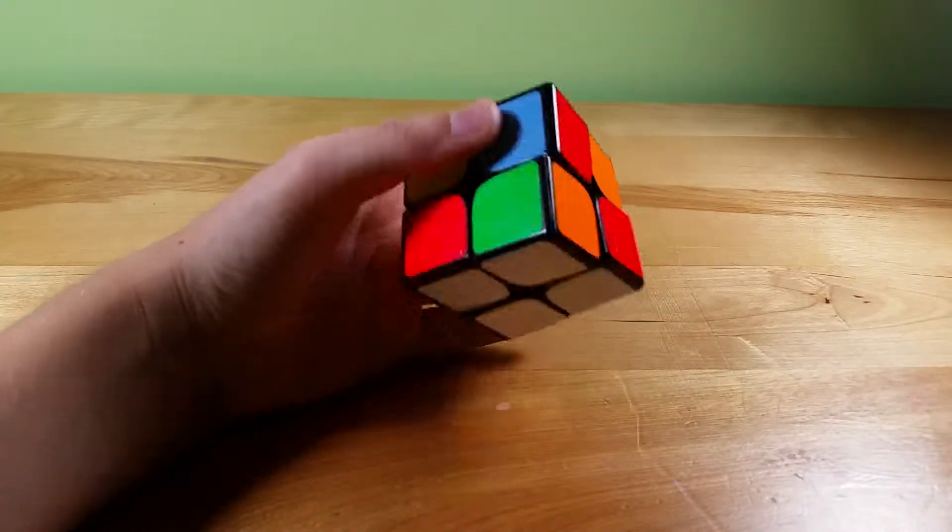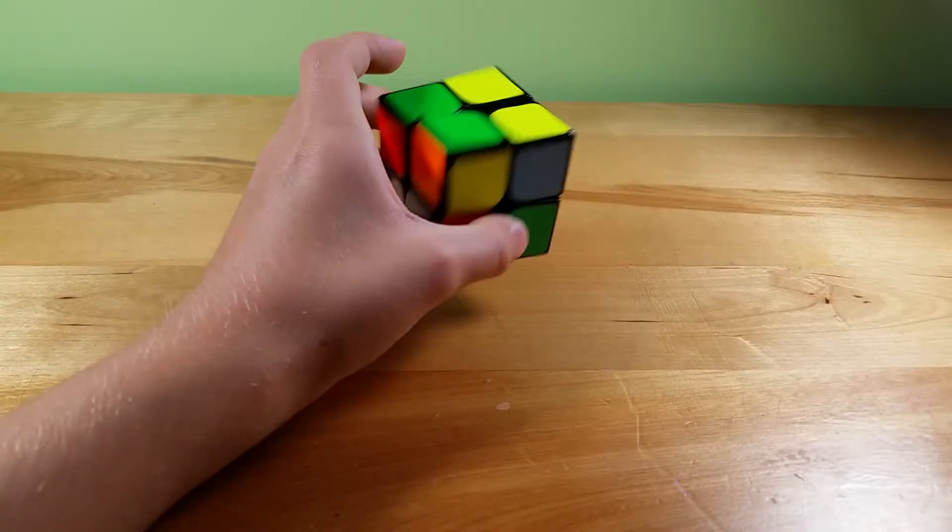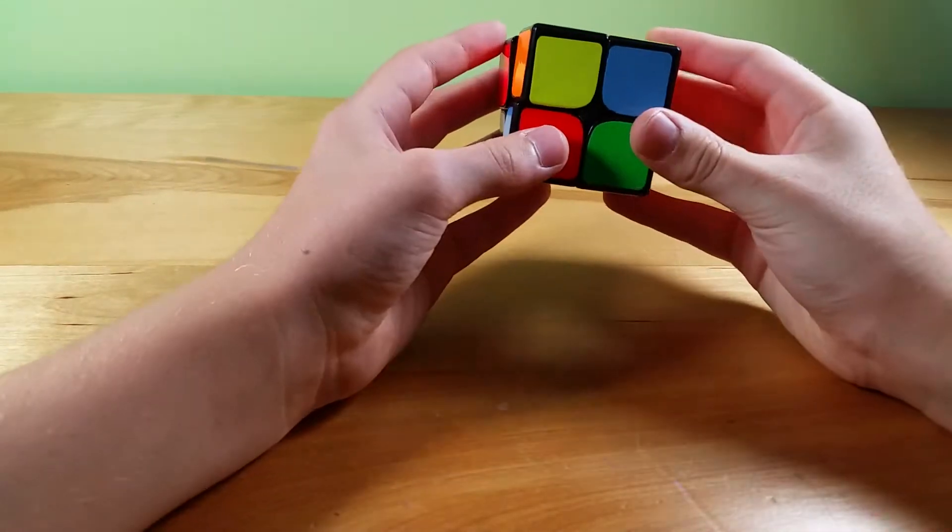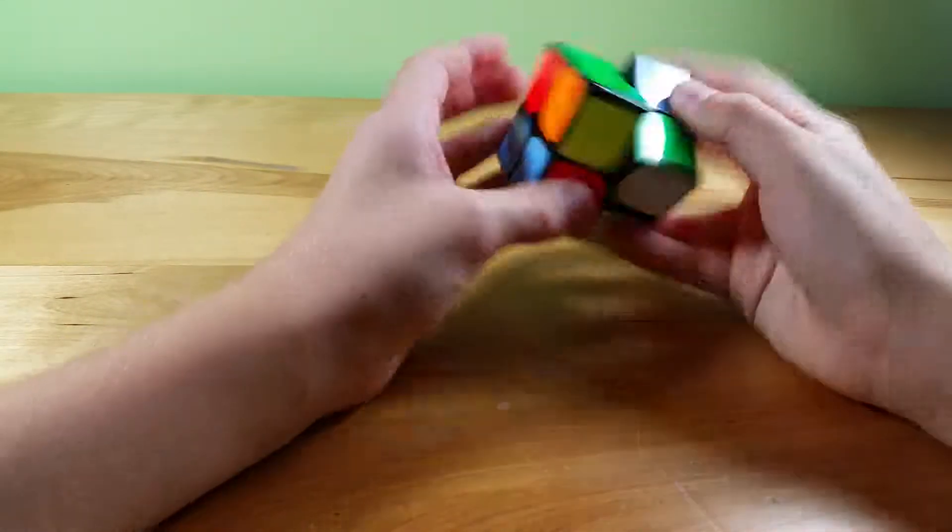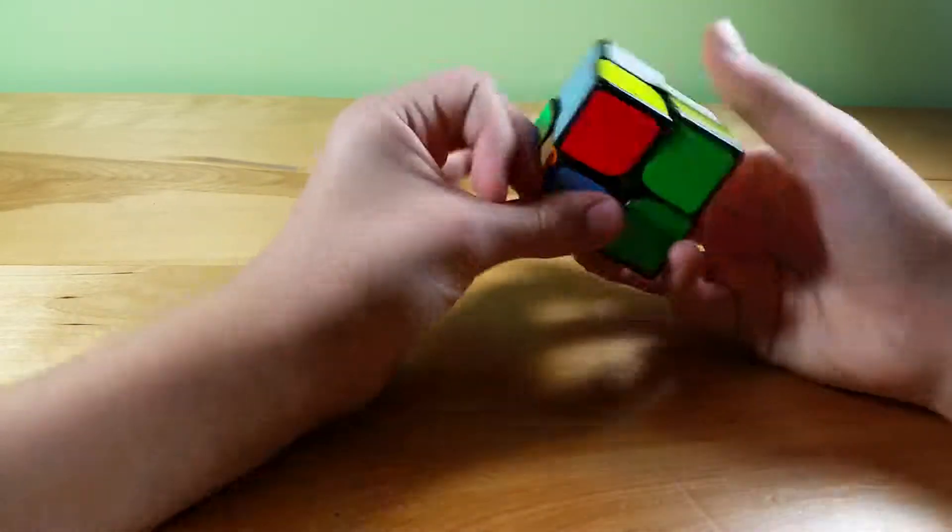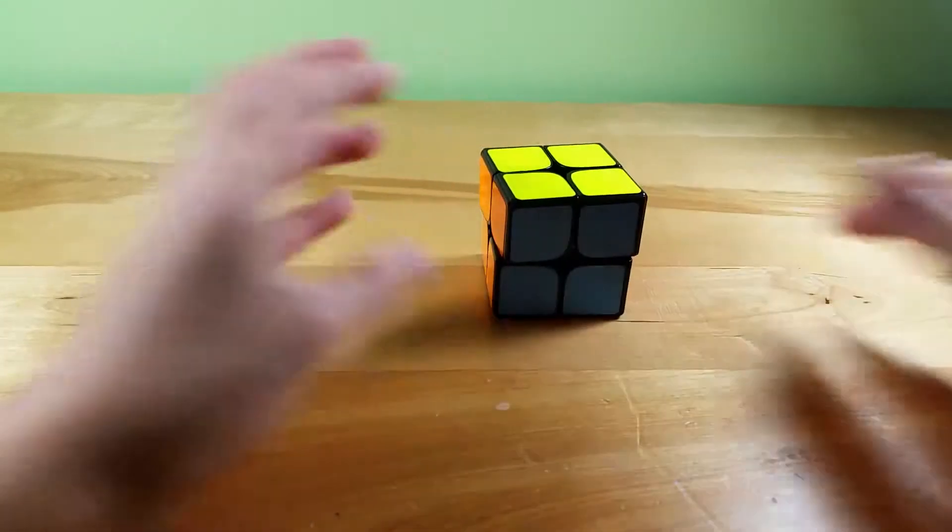Okay so here's another super easy case. You have a white face solved and I would just probably hold it like this, OLL rotate, and PBL.